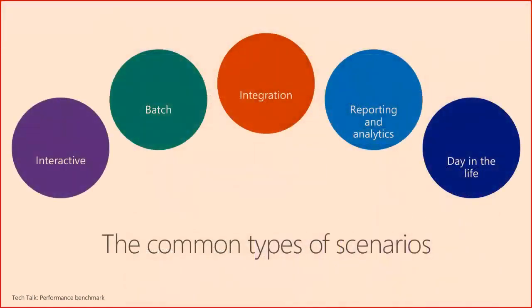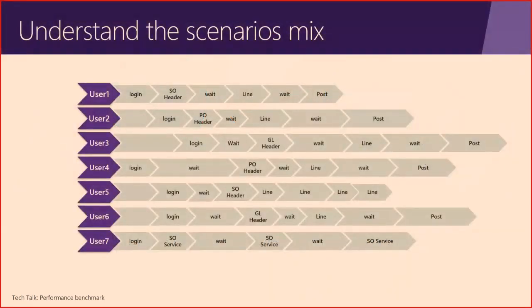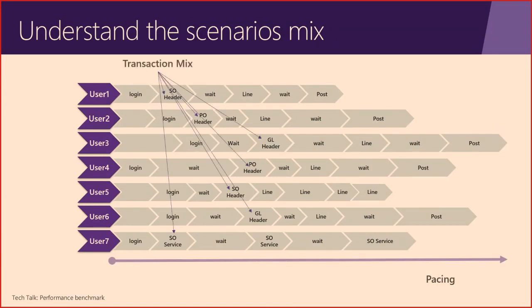When doing a performance benchmark, you focus on interactive workload — concurrent users doing a specific process or multiple processes simultaneously. To make it more real-life, you could add other types of workload: a batch job posting, incremental MRP workloads, integrations that happen before and during go-live, and simulation of reporting and analytics workloads. This gives you a true 'day in a life' testing scenario, because after go-live it's exactly what's going to happen.